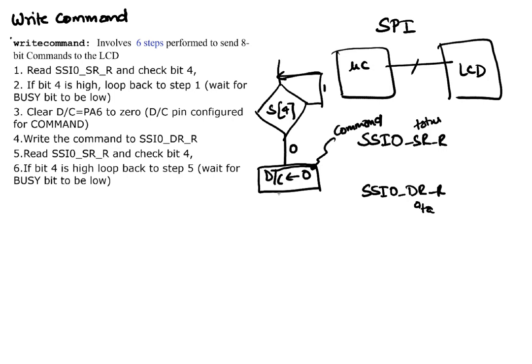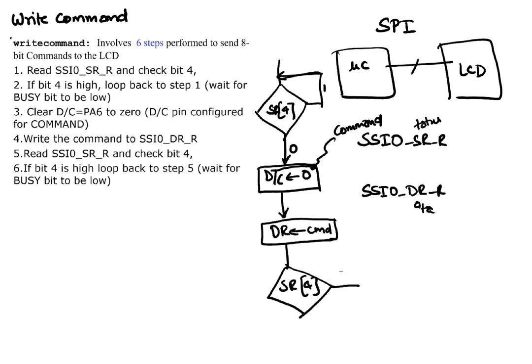Once the DC pin is set to zero, we write the command itself to the data register. Commands can be of different types — to reset the machine, to set the x position, to set the y position, and so on. After writing to the data register, we check status register bit 4 again — as long as it's busy we keep looping — and once it's done we exit the subroutine, confirming the command has been successfully completed.